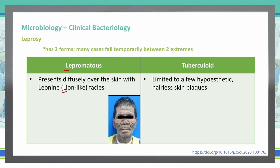For the tuberculoid form, it's limited to just some hypoesthetic or hairless skin patches. So when you see hairless and white-colored skin lesions, that's going to be more of your tuberculoid form.